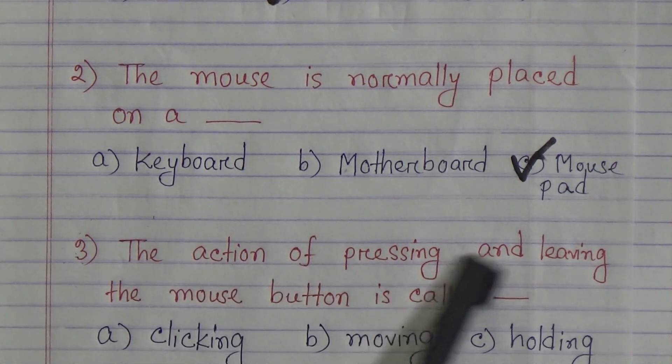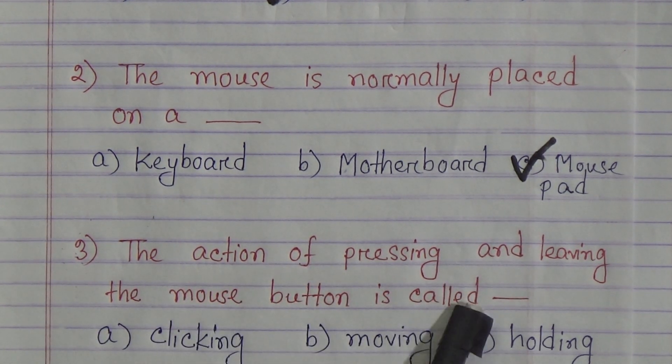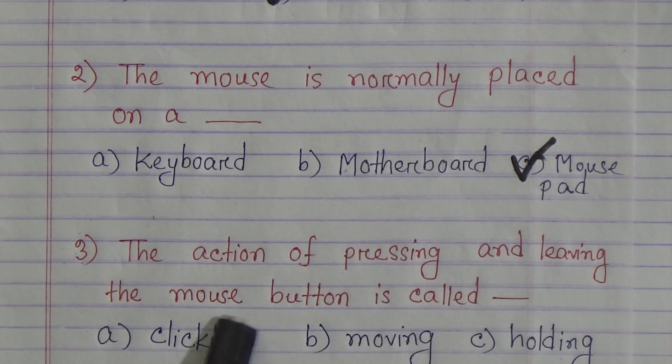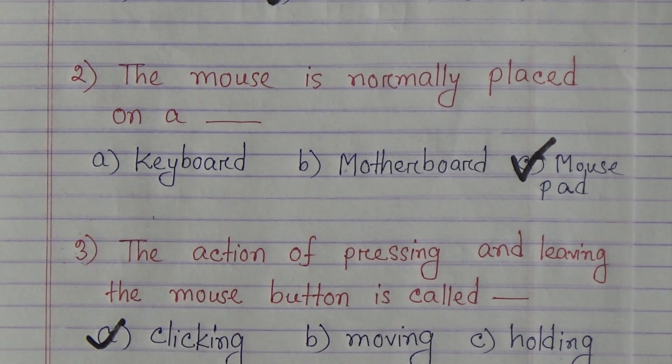Question 3: The action of pressing and leaving the mouse button is called: Option A: Clicking, Option B: Moving, Option C: Holding. The answer is A: Clicking.